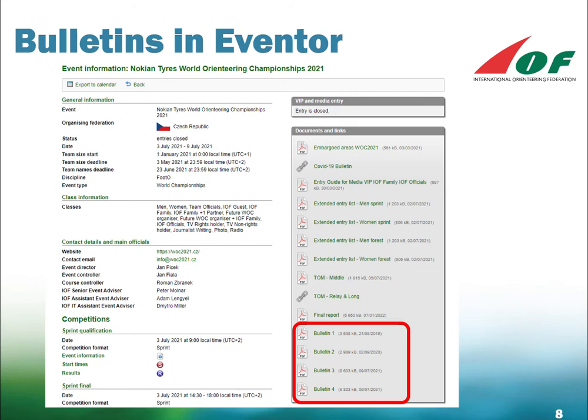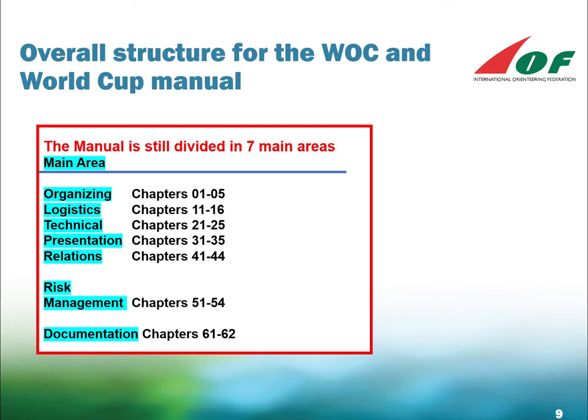Now let us take a closer look at where the manuals for the two types of events are the same and where you will find the differences. The overall structure of the manual is divided into seven main areas: Organizing (Chapters 1–5), Logistics (Chapters 11–16), Technical (Chapters 21–25), Presentation (Chapters 31–35), Relations (Chapters 41–44), Risk Management (Chapters 51–54), and Documentation (Chapters 61–62).